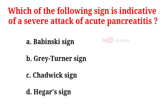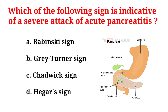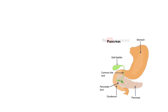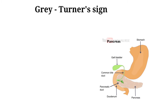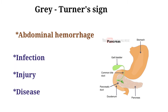Which of the following signs is indicative of a severe attack of acute pancreatitis? A. Babinski. B. Gray Turner. C. Chadwick. D. Hager's sign. And the correct answer is B. Gray Turner. The underlying cause of Gray Turner's sign is generally thought to be abdominal hemorrhage, the main source of which is commonly accepted as the pancreas. The cause of this bleeding is severe inflammation due to infection, injury, or disease.